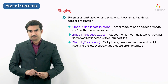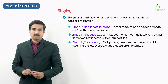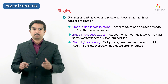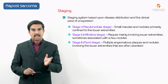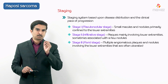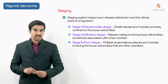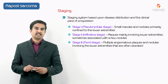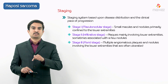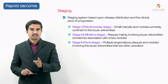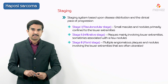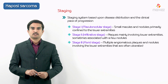Stage 3 is called the florid stage, which means there will be multiple angiomatous plaques and nodules seen together. These are also involving the lower extremities, but the classical difference between the plaque stage and stage 3 is that the lesions in stage 3 are often ulcerated, which cannot be seen in stage 2.